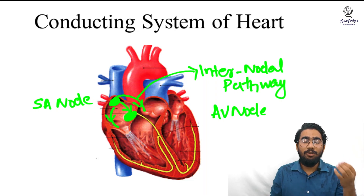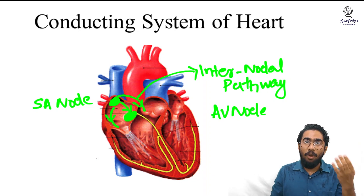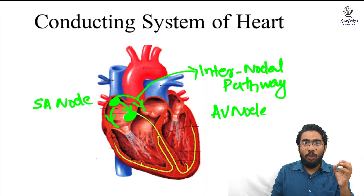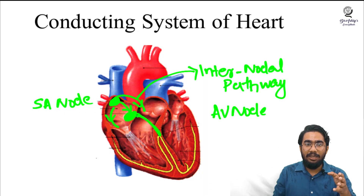The signals reaching the atrioventricular node then spread into the ventricle through a thick bundle of fibers. This bundle passes through the interventricular septa, and this thick bundle of fibers together is known as the bundle of His.